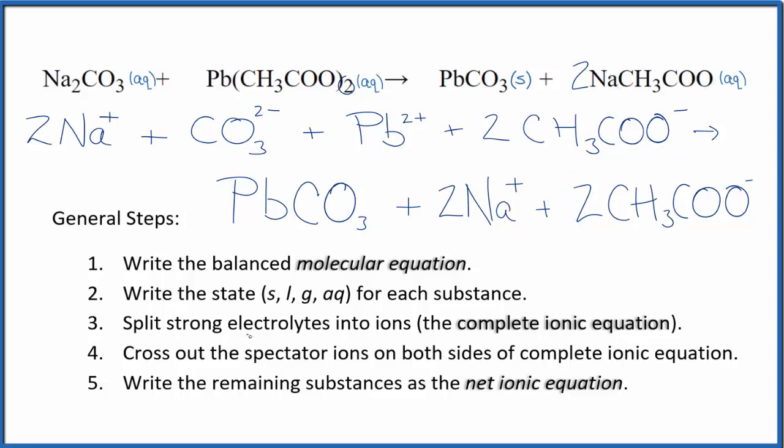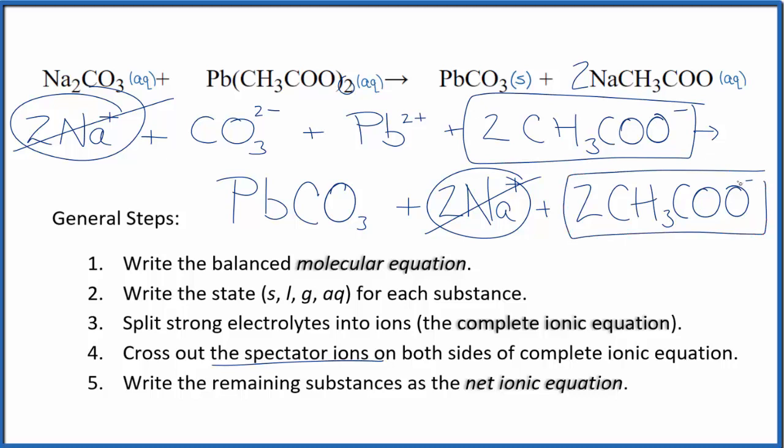To cross out the spectator ions, we can see in the reactants we have two sodium ions and in the products we have spectator ions - we cross those out. And then we have two acetate ions here in the reactants and two acetate ions here in the products - spectator ions, cross them out. What's left, that's the net ionic equation for sodium carbonate plus lead(II) acetate.